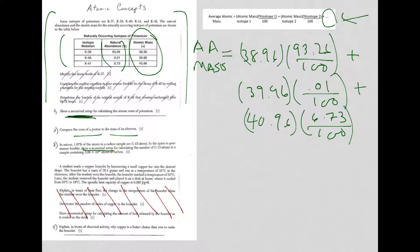It says, explain in terms of chemical activity why copper is a better choice than iron to make a bracelet. Well, copper is not as chemically active as iron, which is an appropriate answer. Or you could say iron oxidizes easier than copper. But then you might be sitting there saying, how am I supposed to know that? Well, that's a great question.